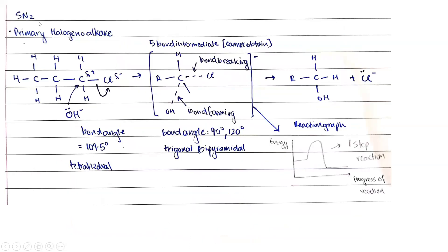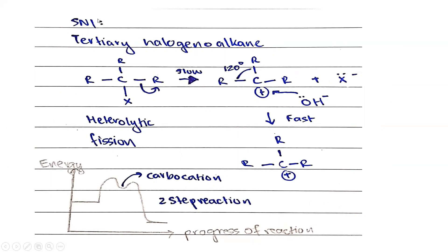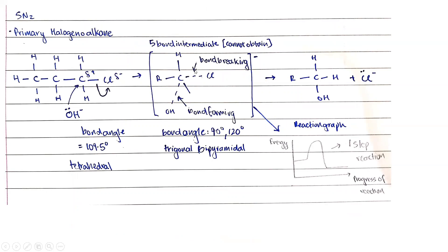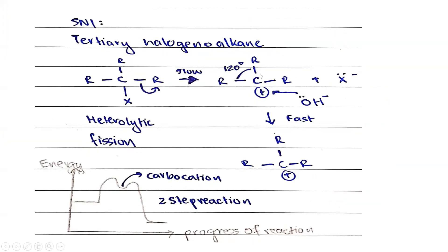For SN2, the rate of reaction depends on both the halogenoalkane and the nucleophile. A quick tip: if it's SN2, the rate depends on two substances; if it's SN1, it depends on one. SN1 is a two-step reaction depicted by a graph with a hump, where a carbocation intermediate is formed with a bond angle of 120°. This carbocation is actually formed and persists as an intermediate — unlike SN2 where the transition state is instantaneous and the reaction does not stop at any intermediate stage.